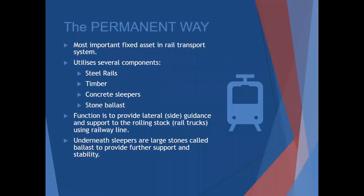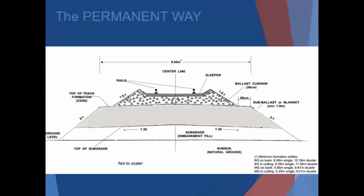The function is to provide lateral - which is side guidance - to the rolling stock. Rolling stock is the nice word for rail trucks, which is the wheels of the train, using a rail line. Underneath, sleepers are large stones called ballasts to provide further support and stability. You get your rail at the top, you get a sleeper, and then you get a ballast cushion, which is all those rocks.